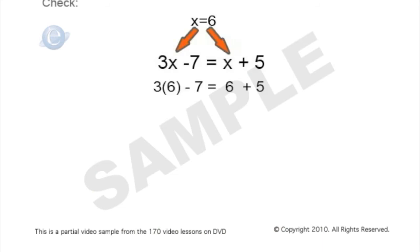3x minus 7 becomes 3 times 6 minus 7. 18 minus 7, which is 11. The right side of our equation, x plus 5 becomes 6 plus 5, which is also 11.